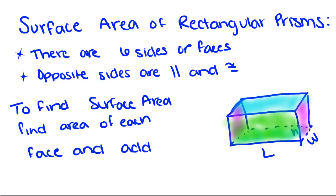So to find the surface area, find the area of each face and add. So for a rectangular prism, we can take the area of the top times 2, because the area of the top is equal to the area of the bottom, plus the area of the right times 2, plus the area of the front times 2. Now that's only for a rectangular prism. When we talk about triangular prisms, it's going to be a little bit different.